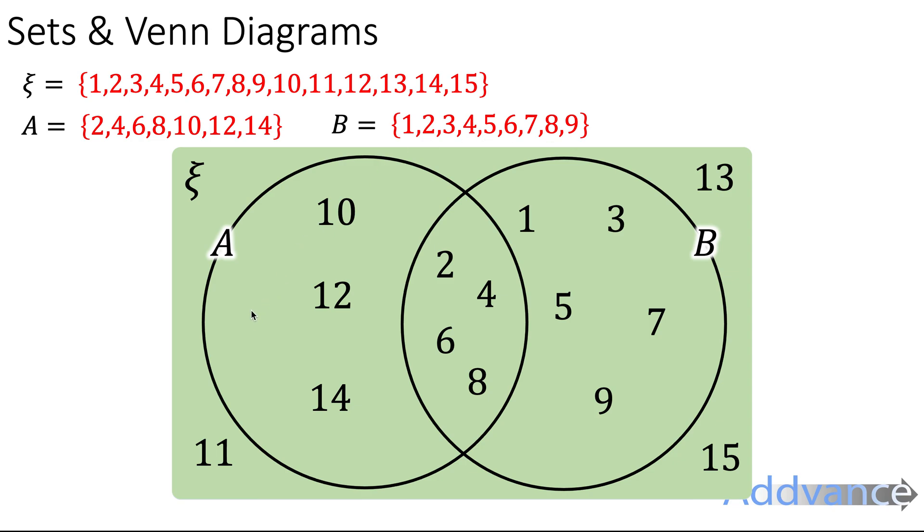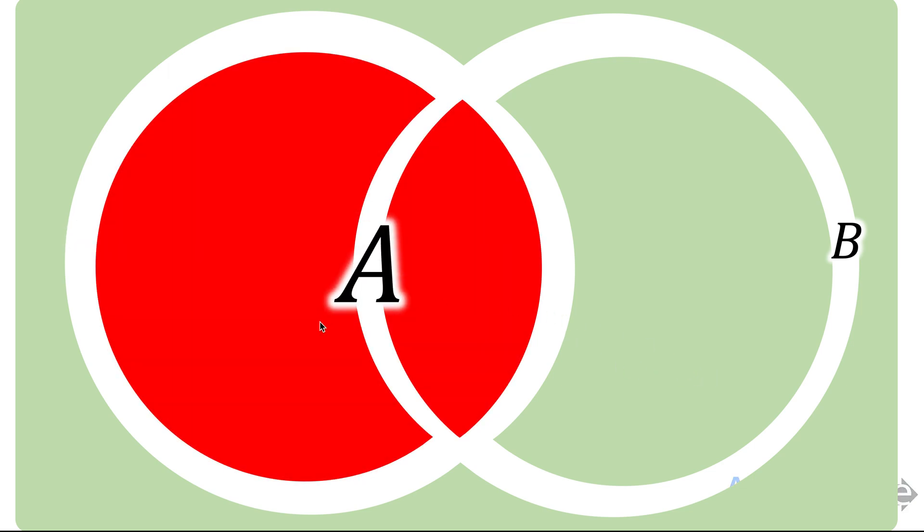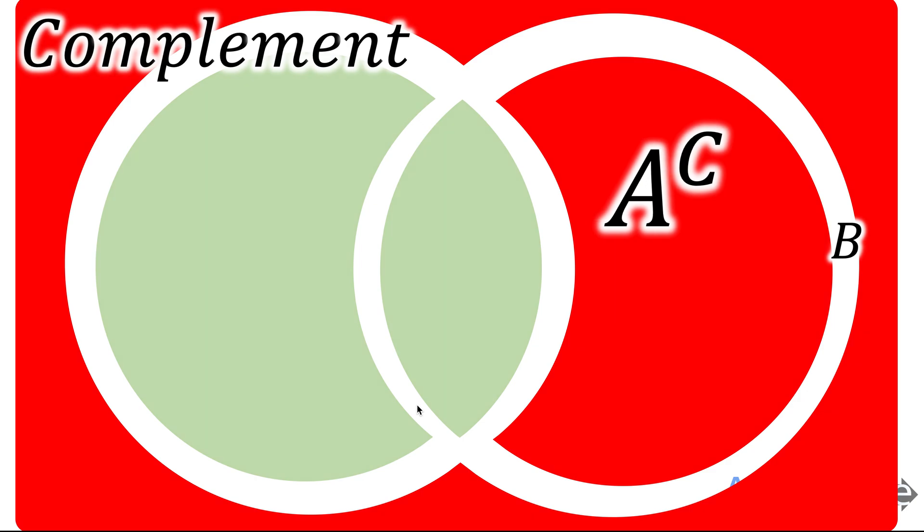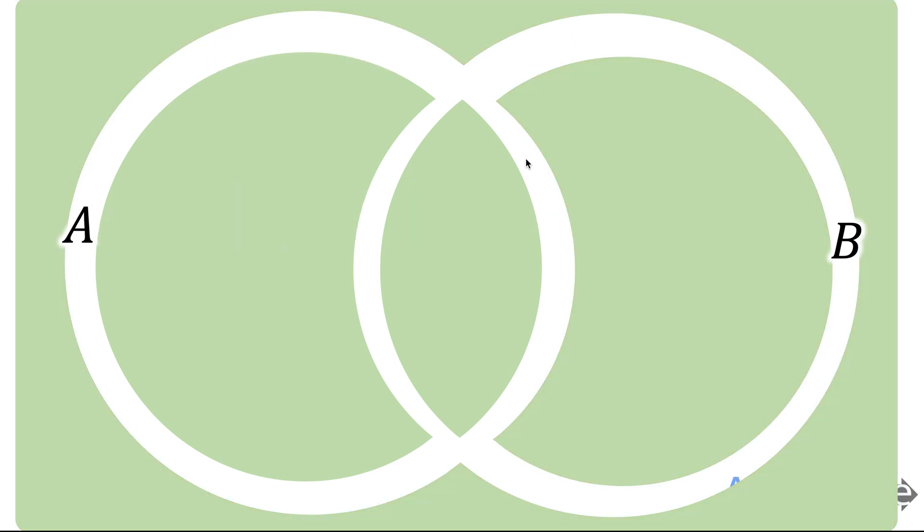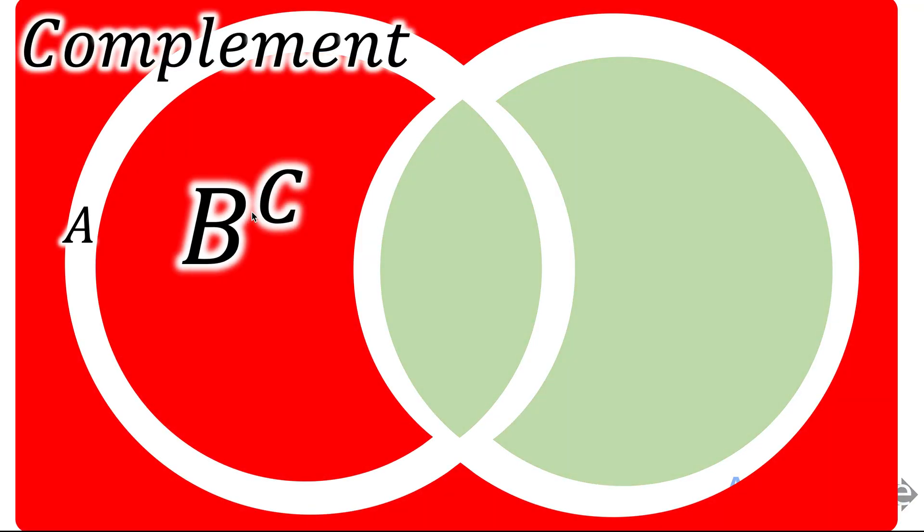Now let's look at this more carefully. We can describe these different sections using set notation. For example, firstly we can describe set A, that is everything in the circle A. But we can also describe everything outside of A, and we call that A complement. So A with a small c, floating c, means A complement, and that means things outside of A. Similarly, set B is everything inside the B circle here. But everything outside of B is called B complement. You might also see this written as B dash, that means complement as well.